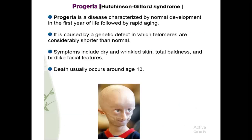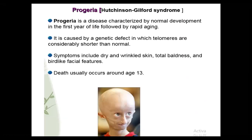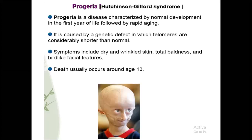Progeria, which is also called Hutchison-Gilford Syndrome, is a disease characterized by normal development in the first year of life, followed by rapid aging. It is such a disease in which up to one year the child's development is normal, but after that it becomes so fast that the child becomes old within a few years. It is caused by a genetic defect in which telomeres are considerably shorter than normal.